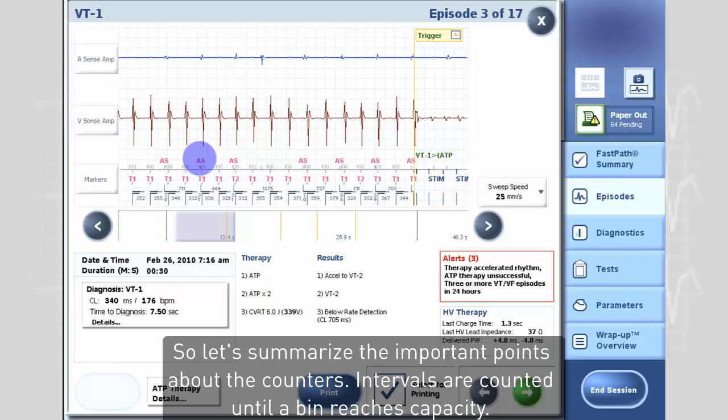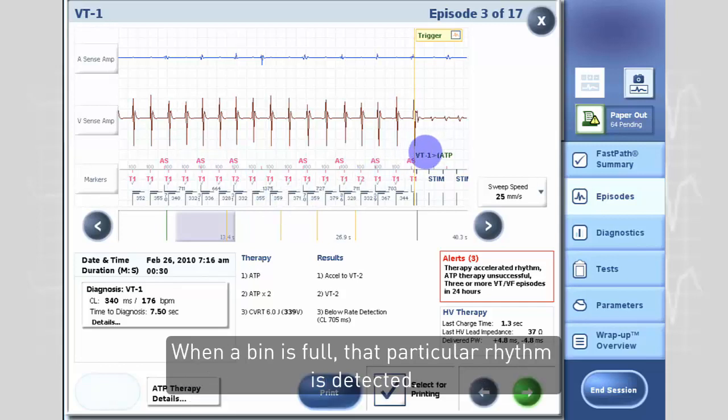Let's summarize the important points about the counters. Intervals are counted until a bin reaches capacity. When a bin is full, that particular rhythm is detected.